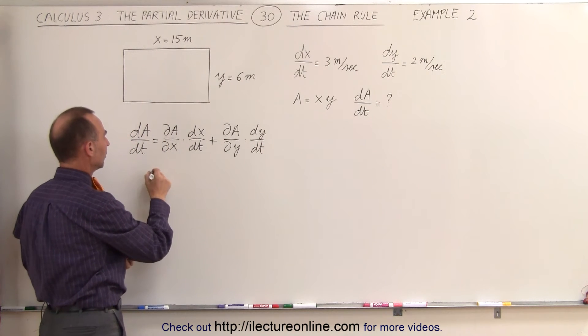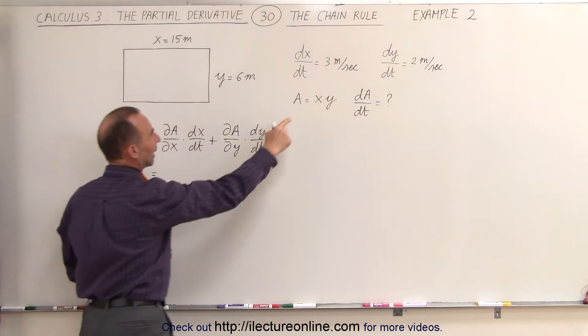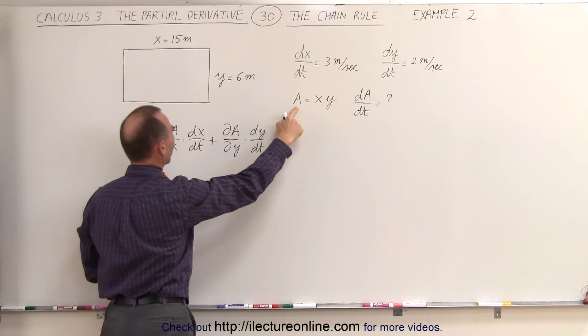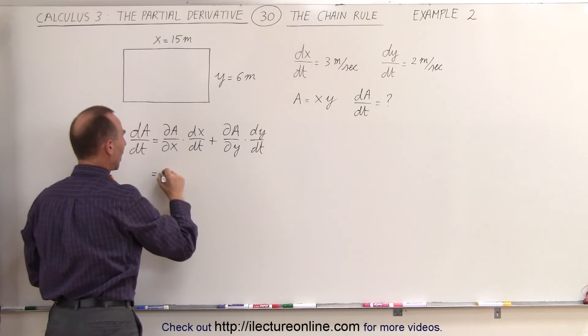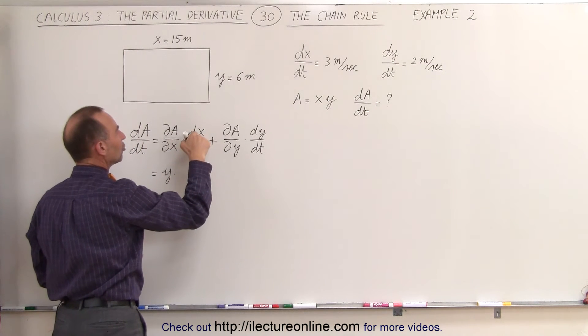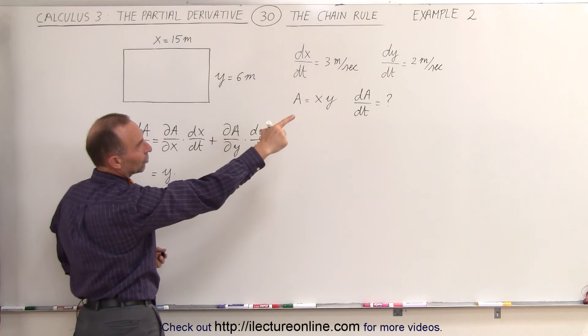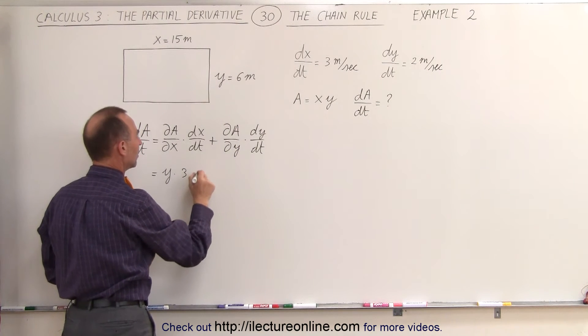Now let's plug in what these are. So this is equal to, going back to a, the partial of a with respect to x, so therefore y is the constant, x is the variable, that gives us y, times the change of x with respect to time, which is equal to 3.